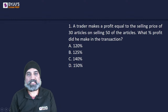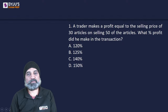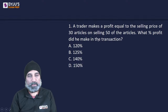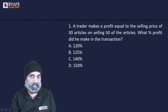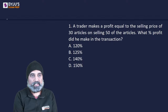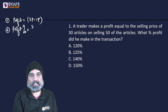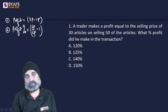Let's begin with the first question. A trader makes a profit equal to the selling price of 30 articles on selling 50 articles. What percentage profit did he make in the transaction? There are a couple of things we need to know beforehand. First, profit is given as selling price minus cost price. Second, profit percentage requires SP divided by CP — the ratio.